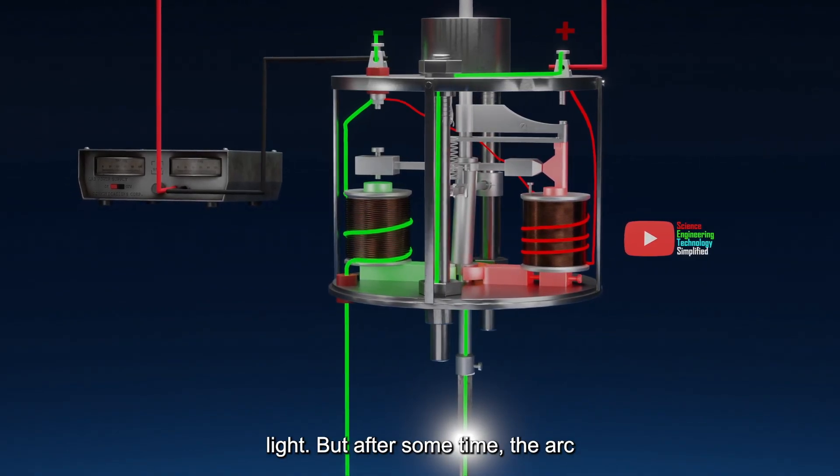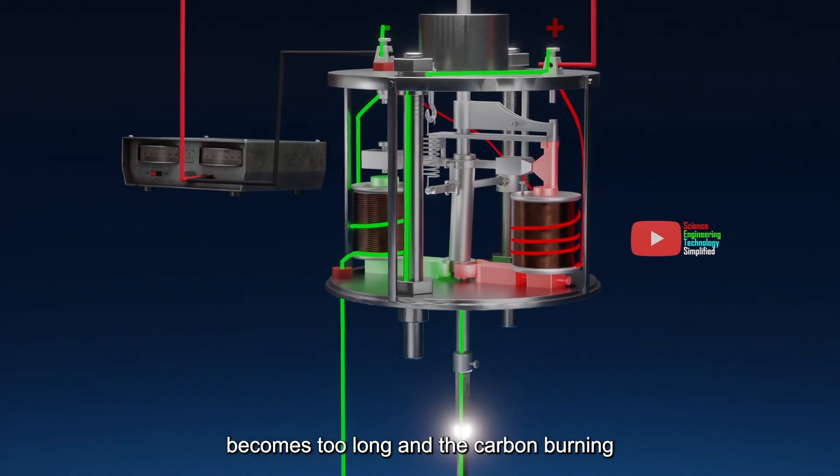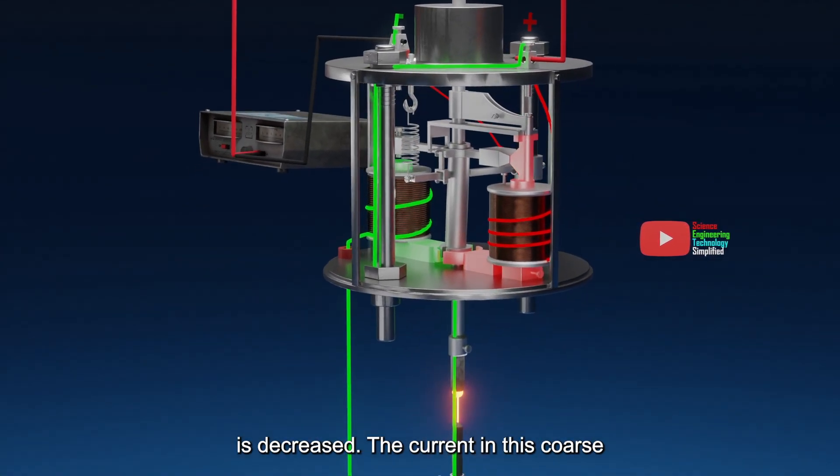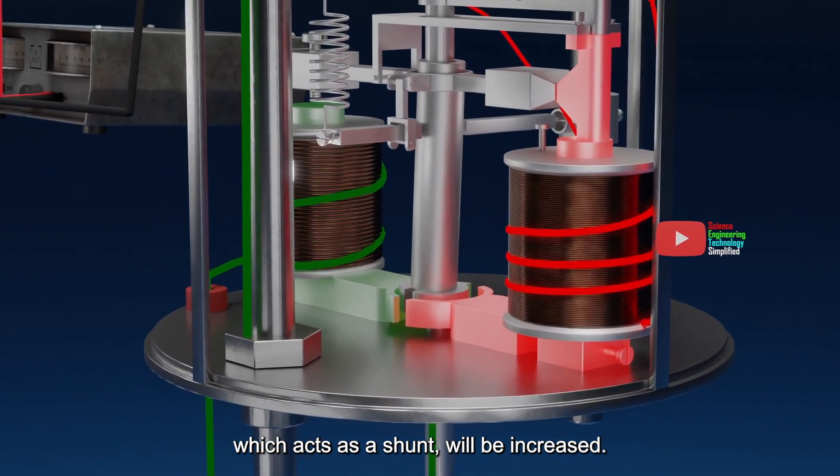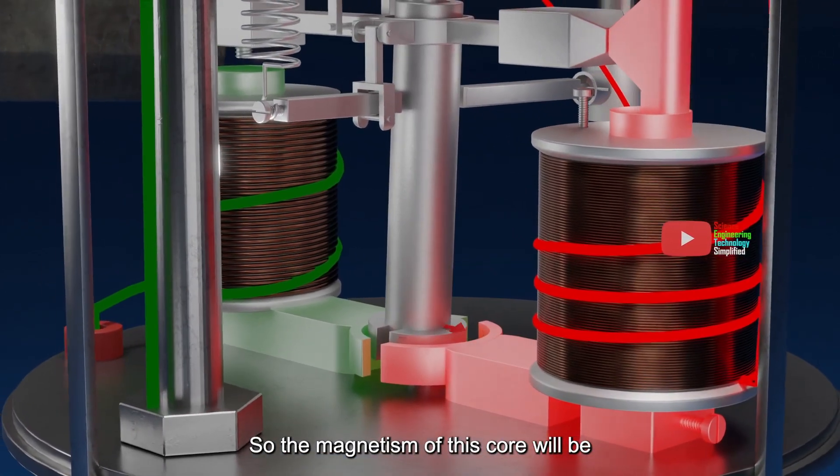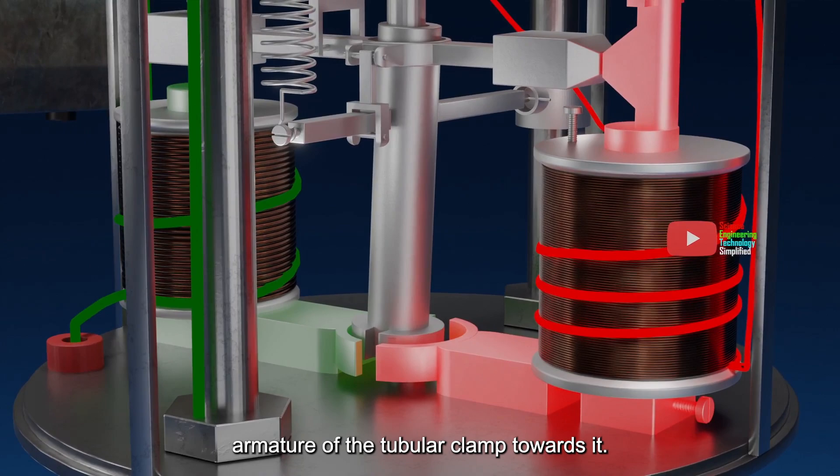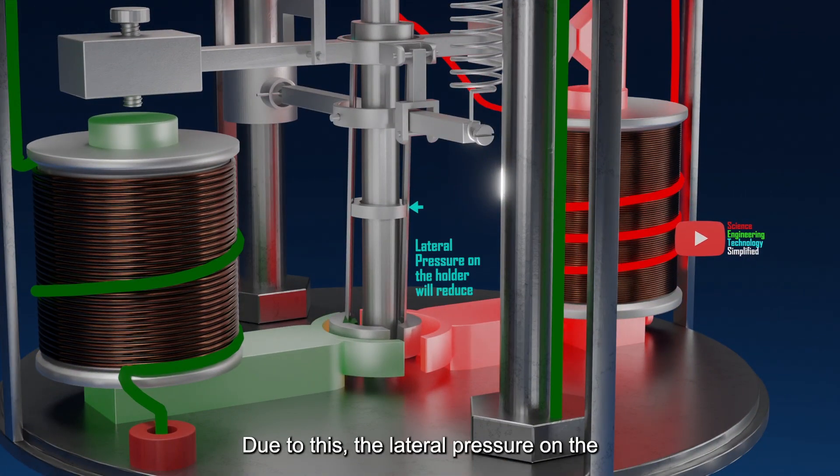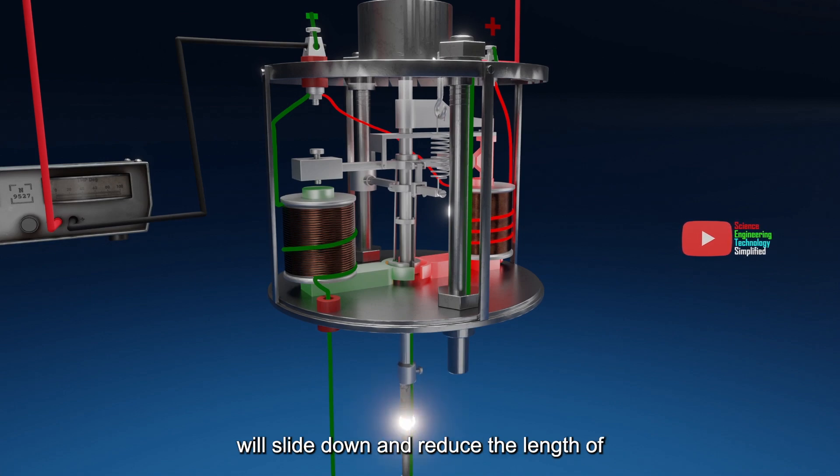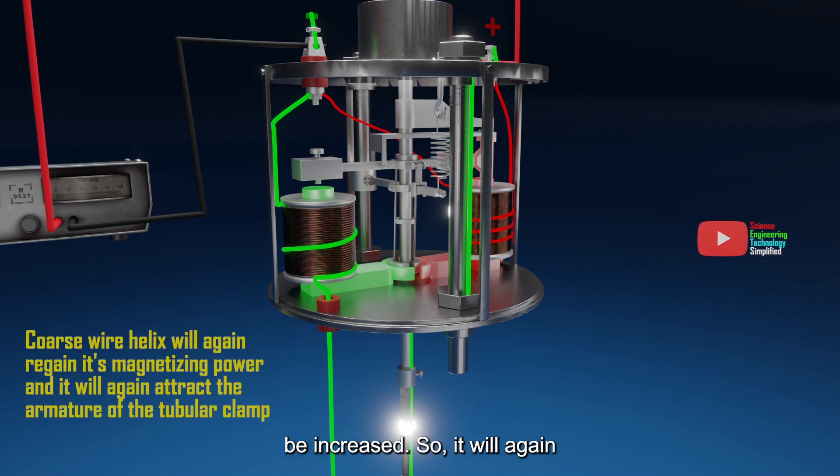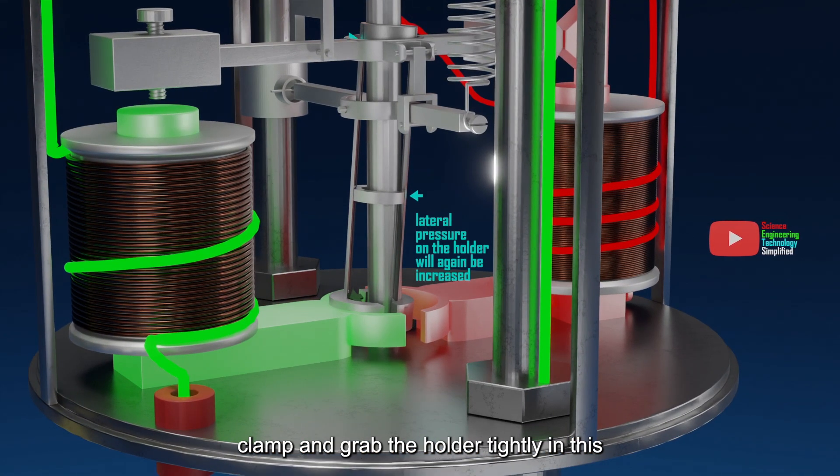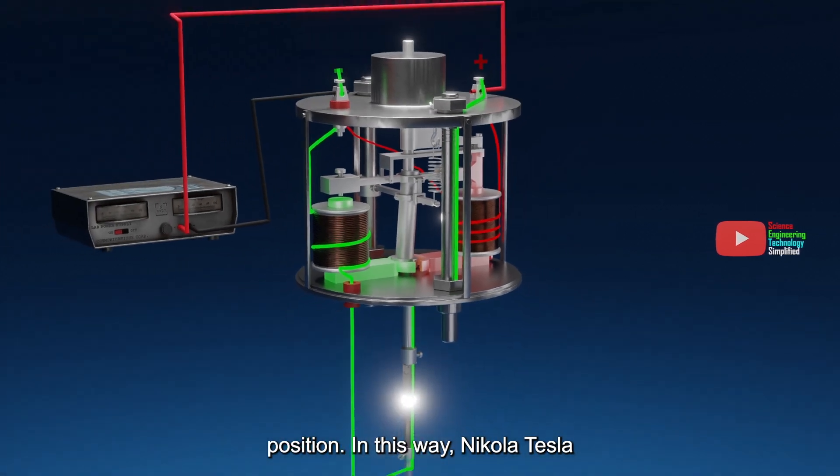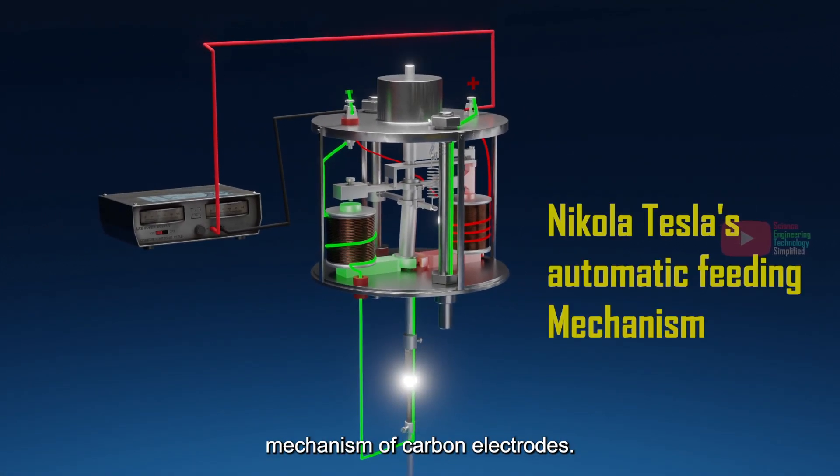Now, the carbons burn smoothly and produce light. But after some time, the arc becomes too long, and the carbon burning is decreased. The current in this coarse wire helix will be reduced, and the current through this fine wire helix, which acts as a shunt, will be increased. So, the magnetism of this core will be increased, and it will attract the armature of the tubular clamp towards it. Due to this, the lateral pressure on the holder will be reduced, and thus holder will slide down and reduce the length of the arc. As the arc length is reduced, the current through the coarse wire will be increased. So, it will again regain its magnetizing power, and it will again attract the armature of the tubular clamp and grab the holder tightly in this position. In this way, Nikola Tesla developed this automatic feeding mechanism of carbon electrodes.